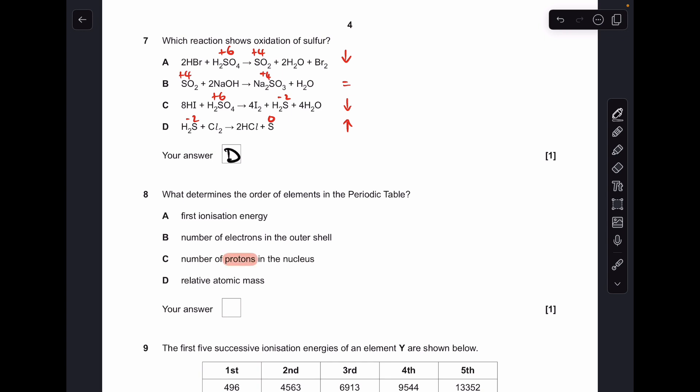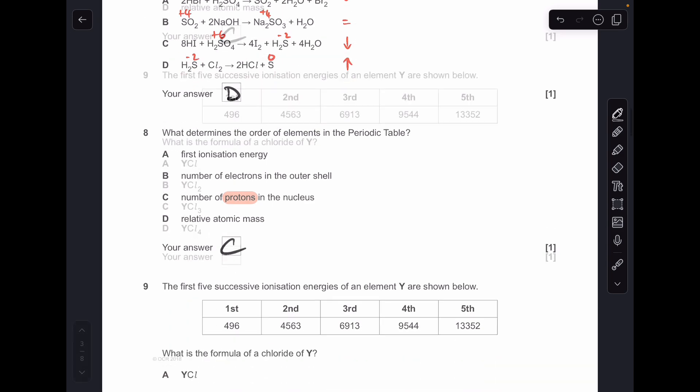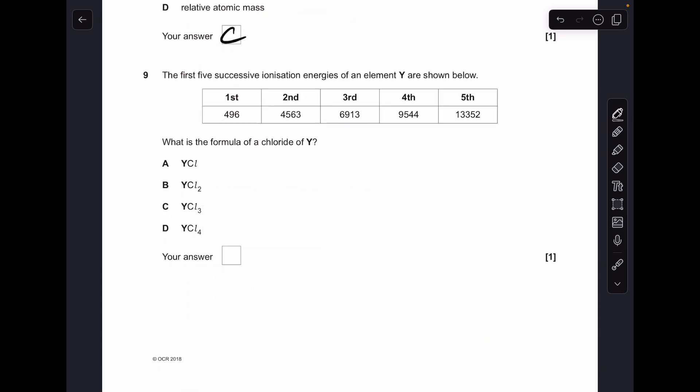Number 8, nice and quick, number of protons in the nucleus determines the order in the periodic table, so C. Number 9, we've got to work out what group element Y is in, so we're looking for the big jump in ionisation energy, and you can see that it happens straight away between 1st and 2nd. So, that means that element Y must be in group 1, so it's going to form a Y plus ion, chlorine forms the 1 minus ion, so we just need one of each to get the compound, so obviously option A is the answer.